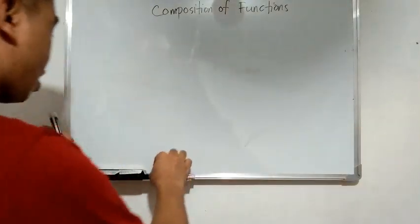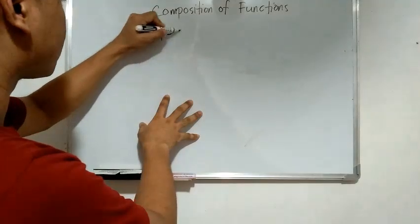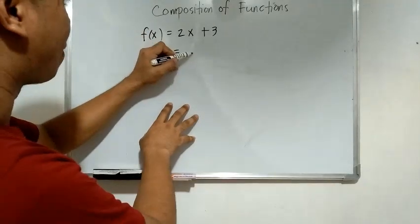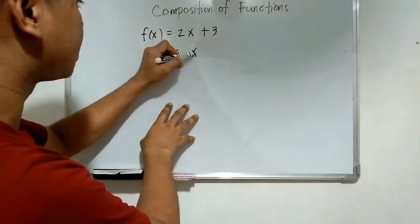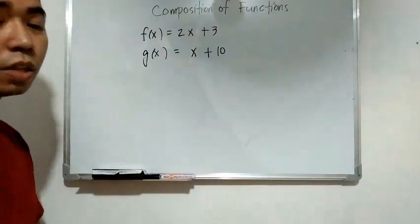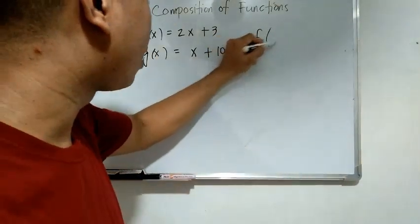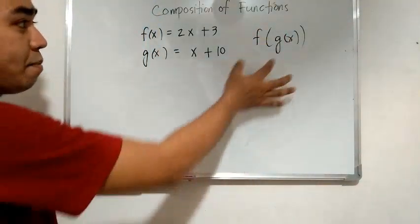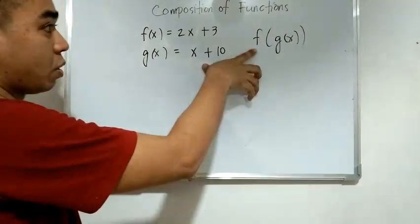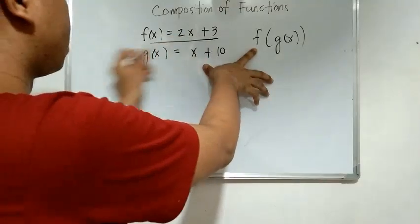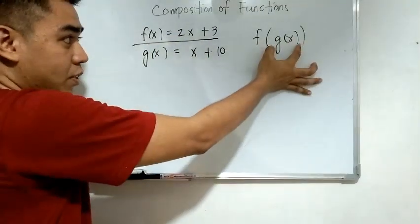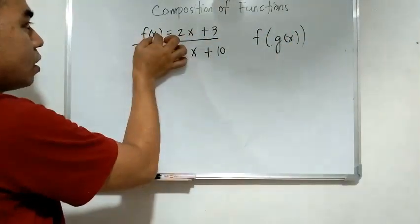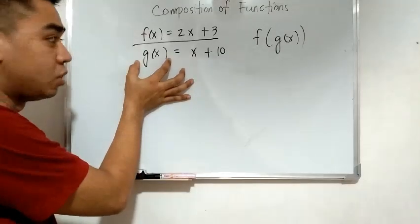For example, f of x is equal to 2x plus 3, and our g of x is x plus 10. Find the value of f of g of x, or f circle g of x. Our main function here is f of x, and our input is g of x. Just replace x with the function g of x.